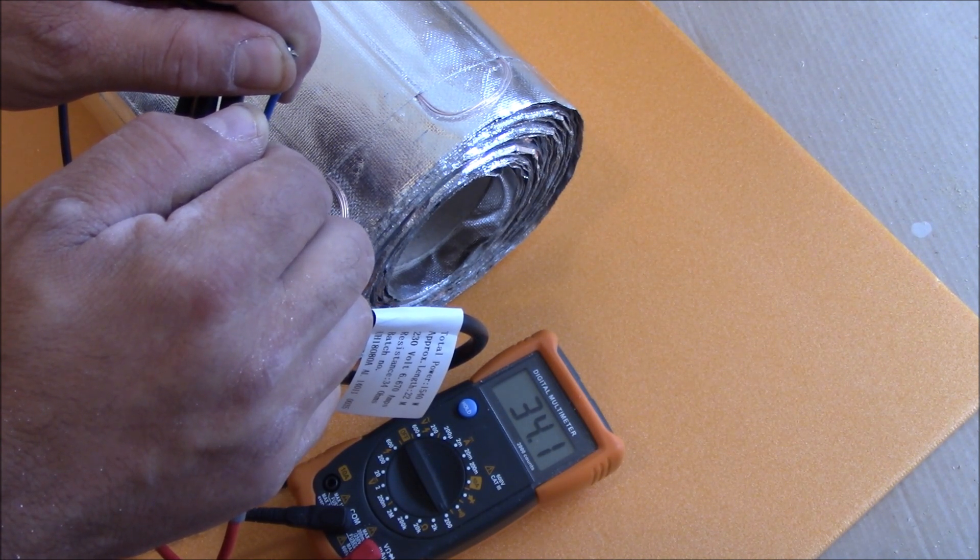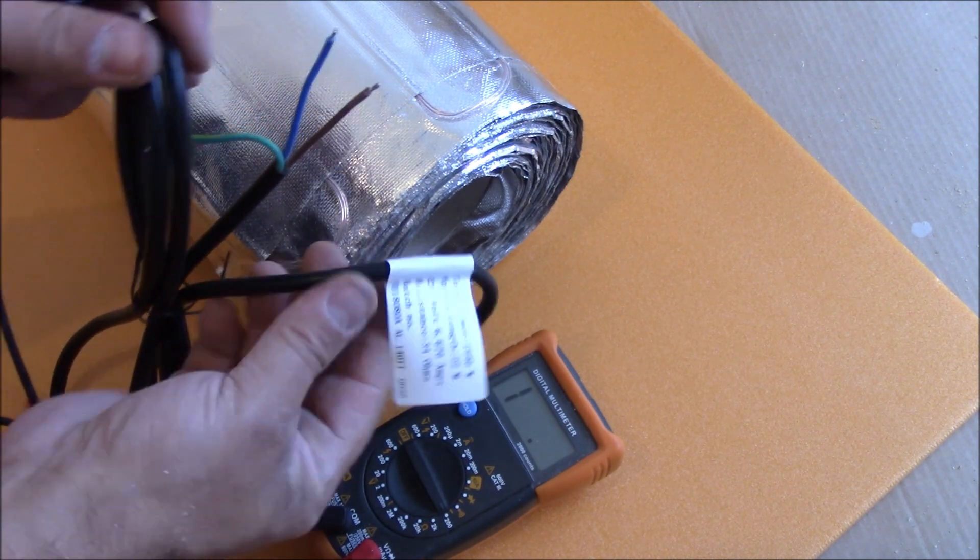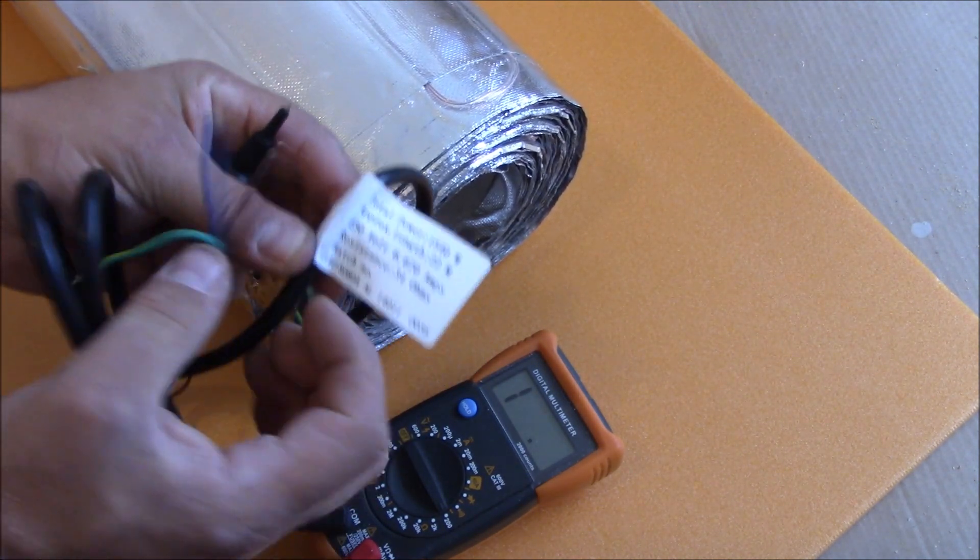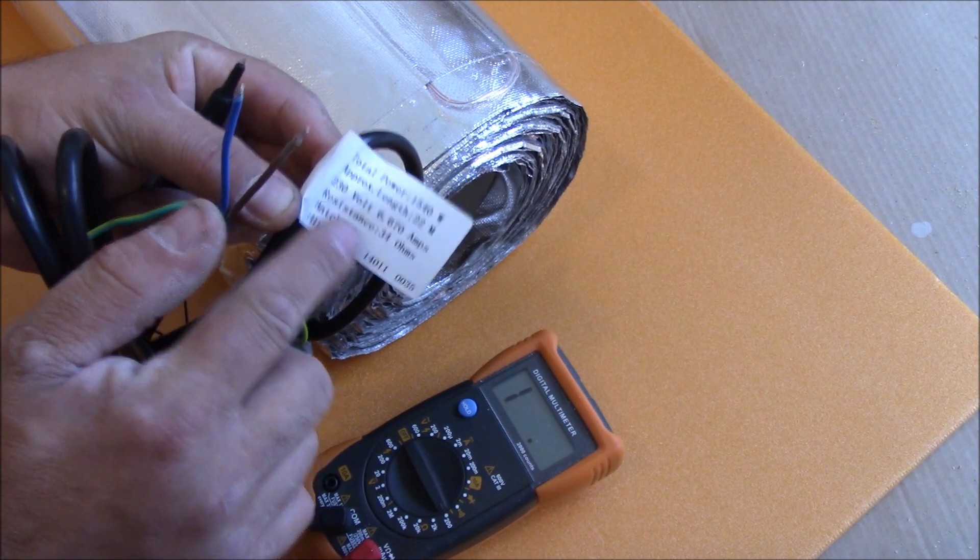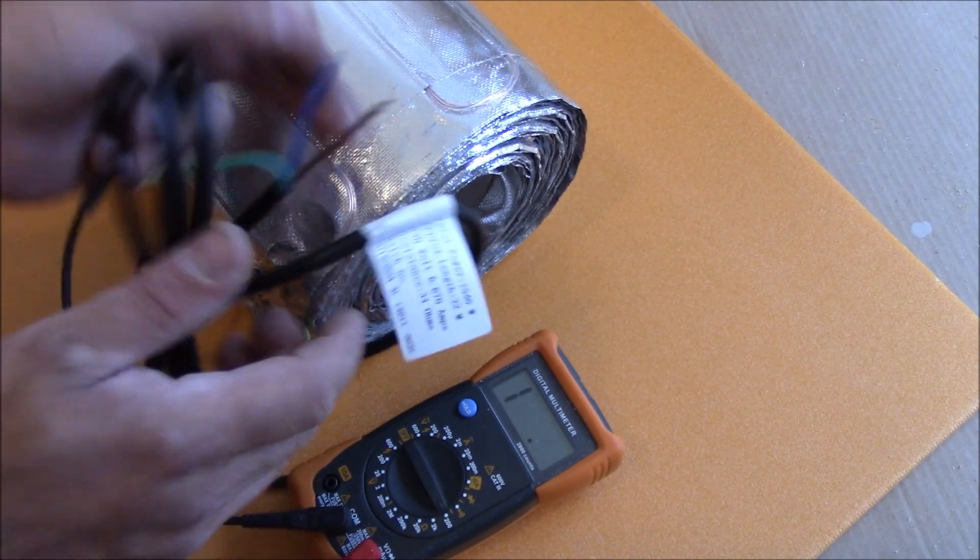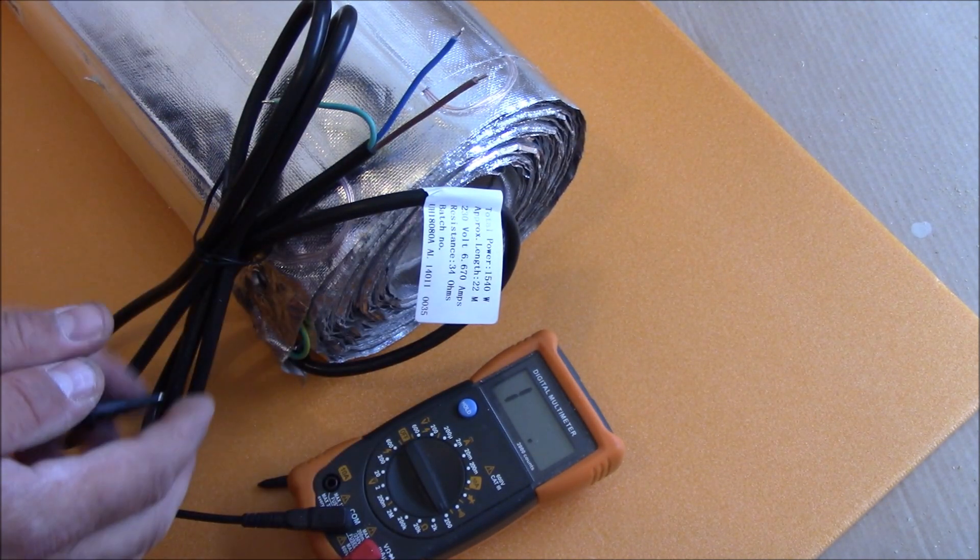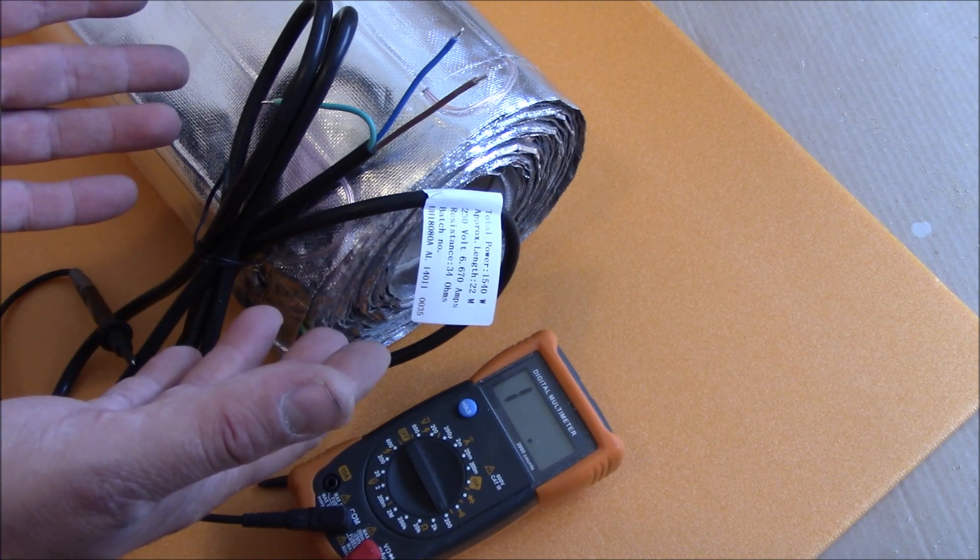34.1 ohms. Let's check again on the label. Yeah, that should be 34 ohms. So that means that this mat is not damaged so we can lay it onto the floor.